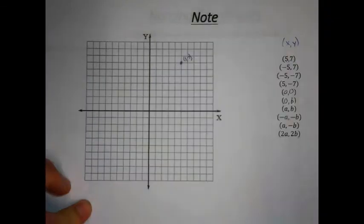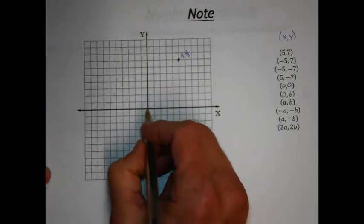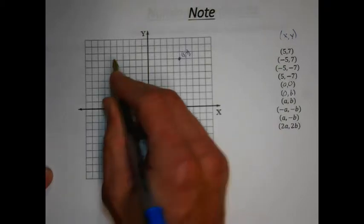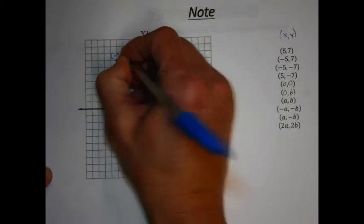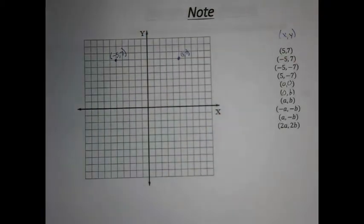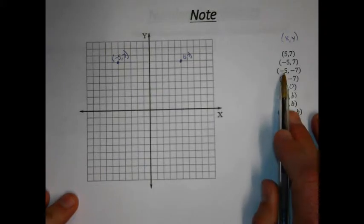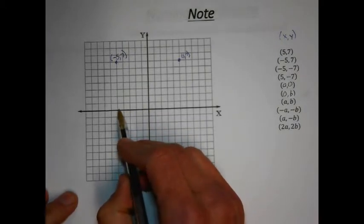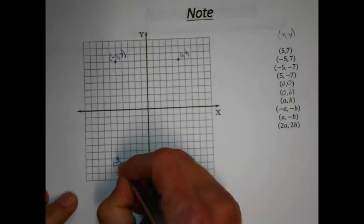A good habit is to label your points after graphing. Next, we'll graph (-5, 7): negative 5 on the x, positive 7 on the y. Starting at 0, we go negative 5 on the x — 1, 2, 3, 4, 5 — then positive 7 on the y — 1, 2, 3, 4, 5, 6, 7. Label it. Then (-5, -7): negative 5 on x, negative 7 on y, ending in the bottom left. Label it negative 5, negative 7.